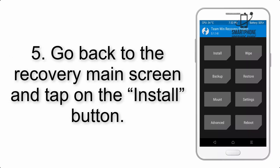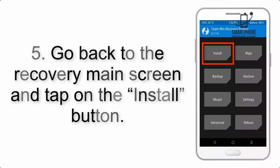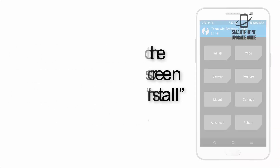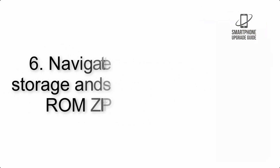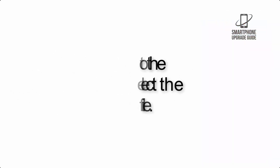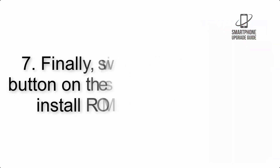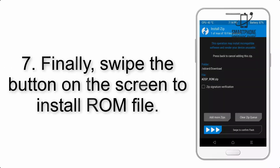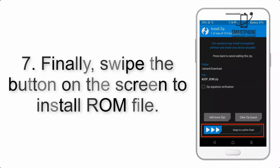Step 4: Swipe the button to wipe the device. Step 5: Go back to the recovery main screen and tap on the Install button. Step 6: Navigate to the storage and select the ROM zip file.